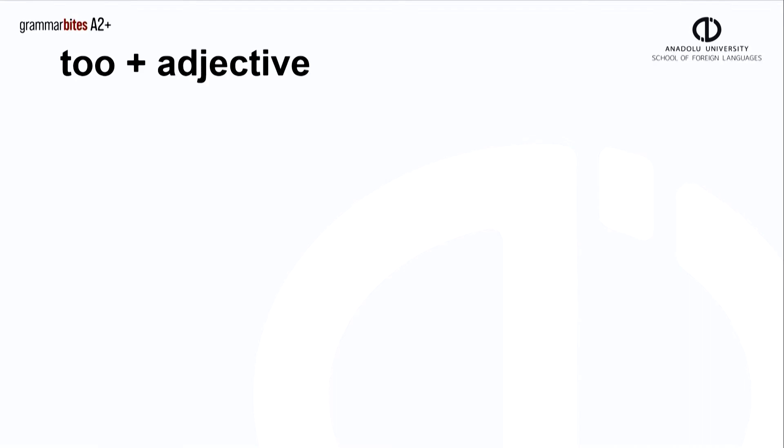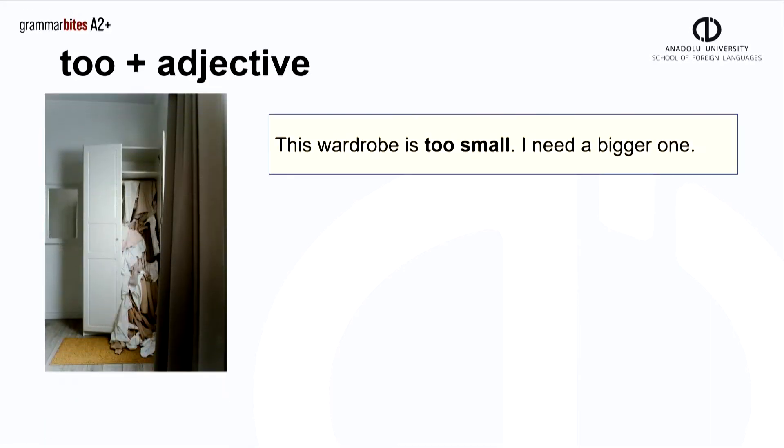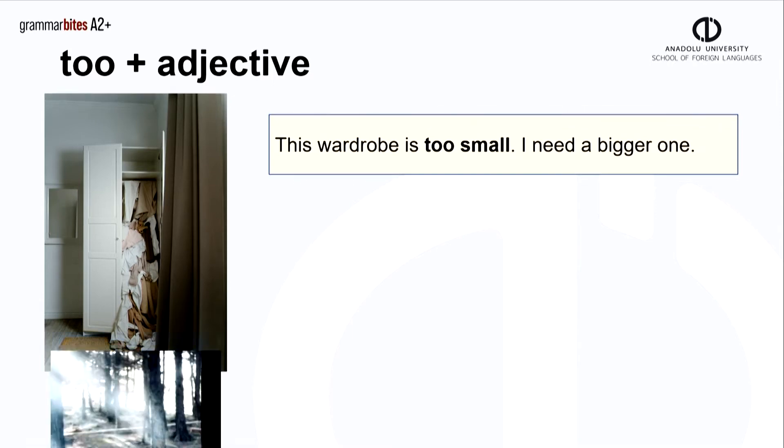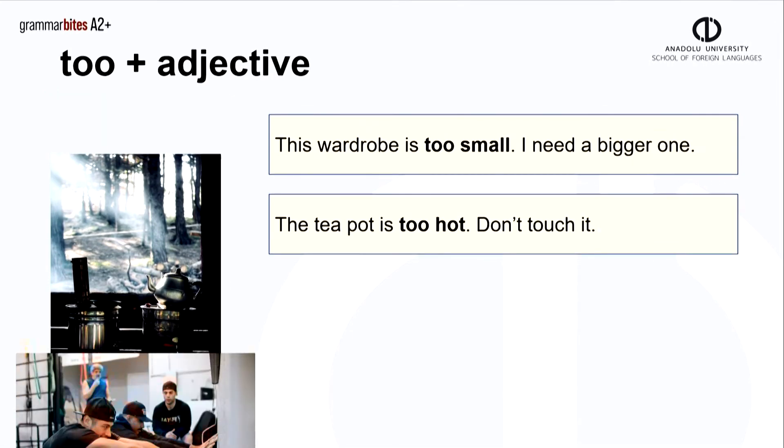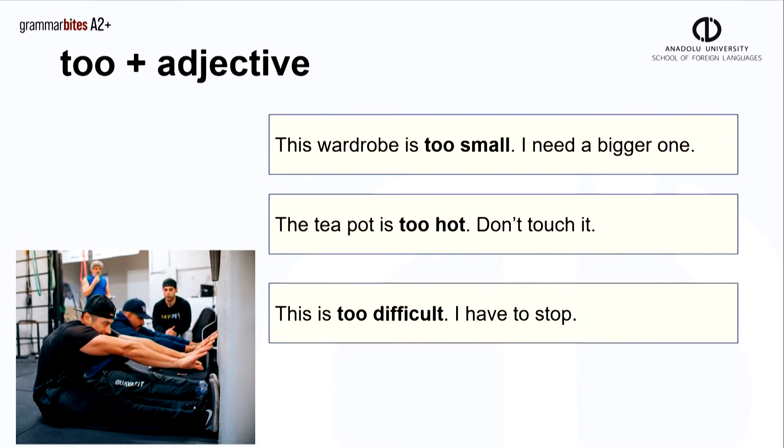We put an adjective after too. This wardrobe is too small. I need a bigger one. The teapot is too hot. Don't touch it. This is too difficult. I have to stop.